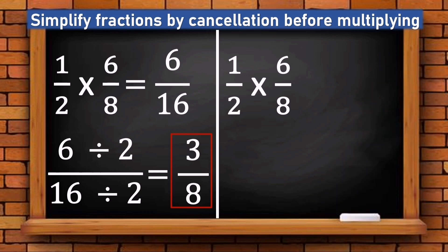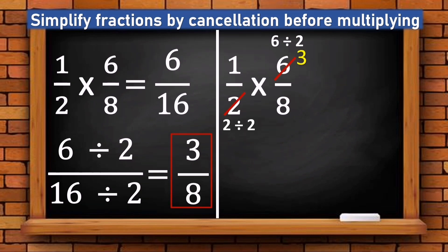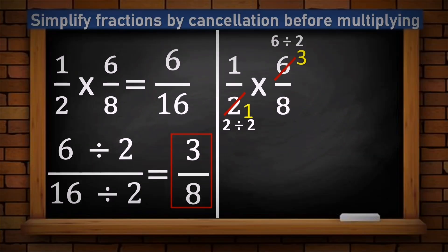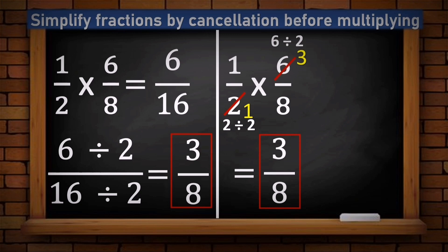Applying this to example two: six and two share a common factor of two. Dividing six by two gives three; dividing two by two gives one. Now multiply: one times three equals three, one times eight equals eight. The answer is three over eight — the same as in method one.